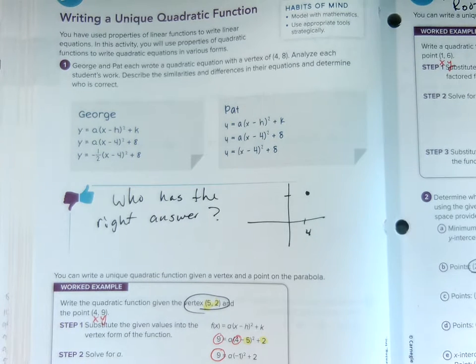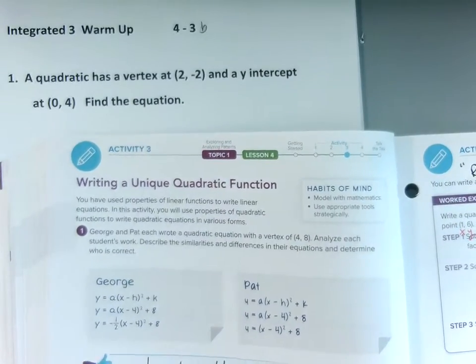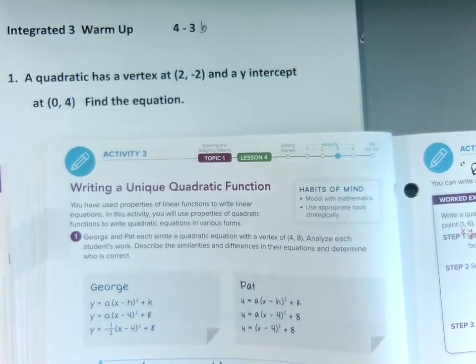Okay everybody, a little bit of a recap of what we talked about today. So again, what we're trying to do is write unique quadratic functions. And there are really three forms.